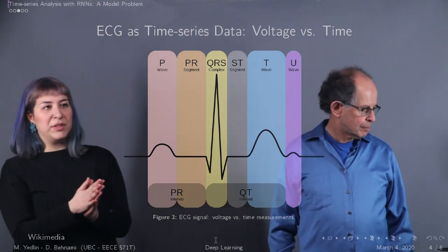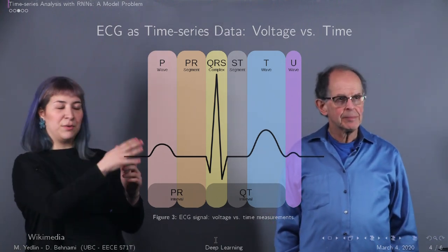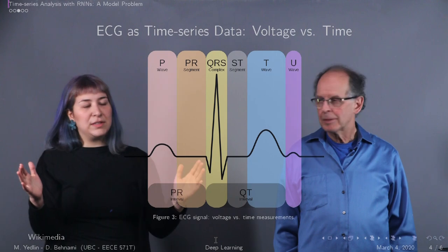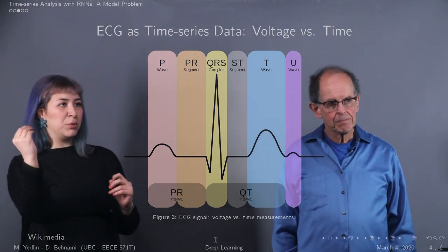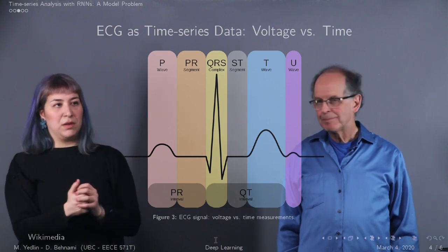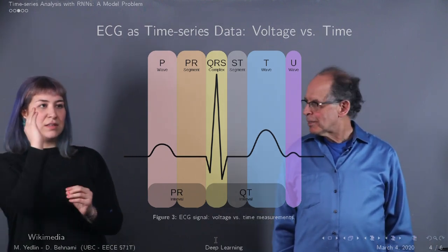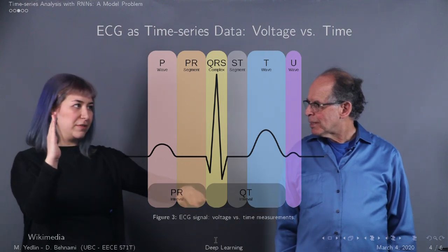So you can see what a normal heartbeat should look like. You have different segments: the P segment, your PR, QRS, and all of that. All of those need to be regular and they will be checked by a doctor to make sure you don't have arrhythmia. And again, the key point here is that you can very easily think of this as a voltage graph as a function of time.